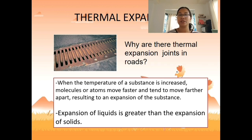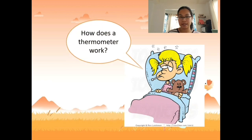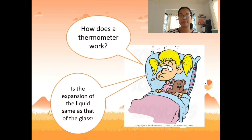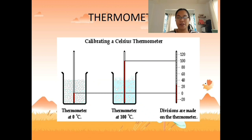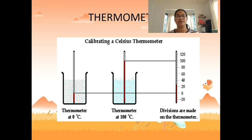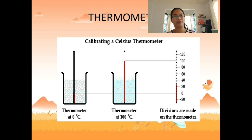Note that the expansion of liquids is greater than the expansion of solids. A classic example of this is the mercury thermometer: mercury expands more than its glass container, which is how the thermometer works.